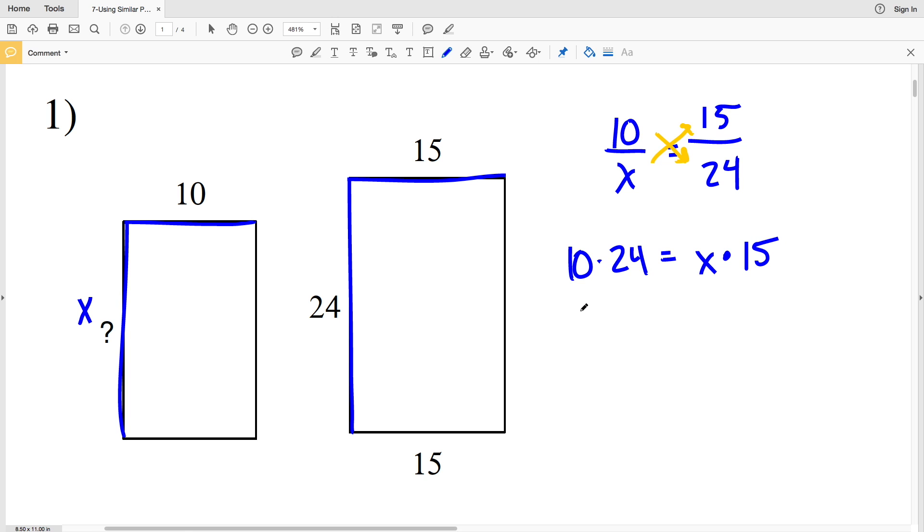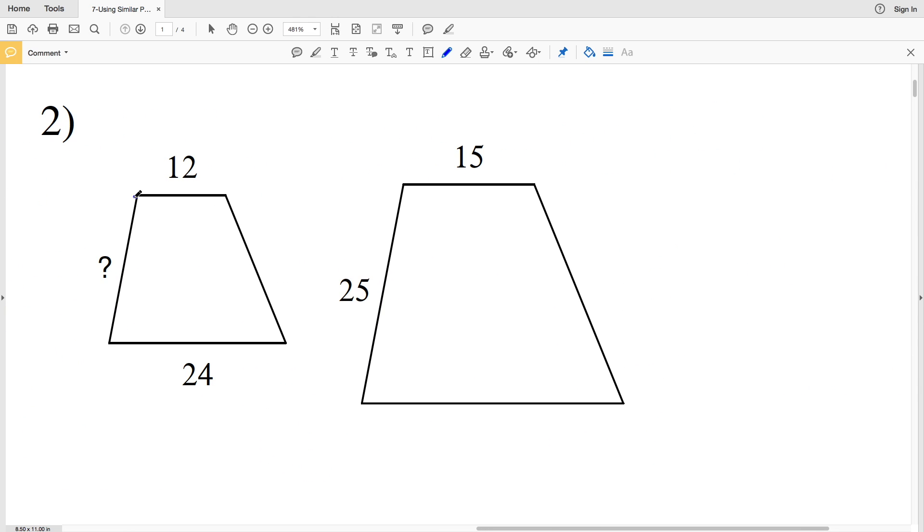10 times 24 is 240 and that's equal to 15X. Now in order to solve for X, we're going to divide by 15 to isolate that X. 15 divided by 15 is 1, and 1 times X is X. So 240 divided by 15 is the missing side length, and that is 16.